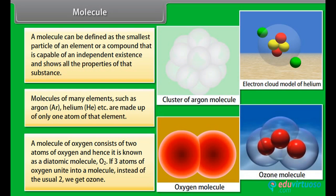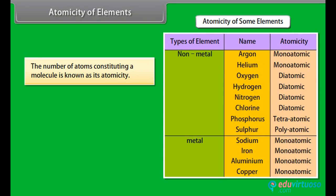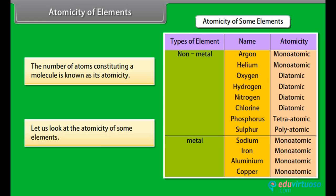If three atoms of Oxygen unite into a molecule instead of the usual two, we get ozone. Atomicity of elements: the number of atoms constituting a molecule is known as its atomicity. Let us look at the atomicity of some elements.